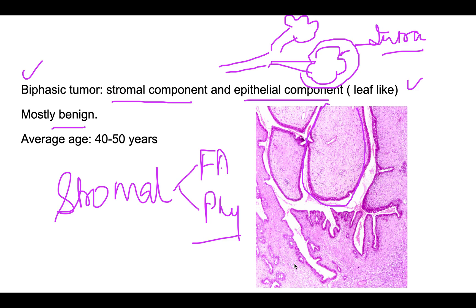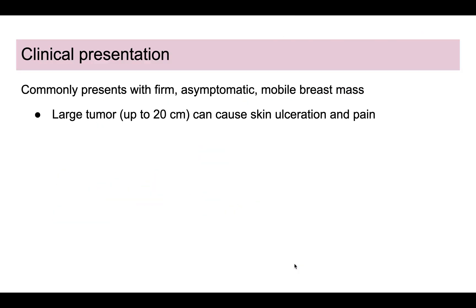This tumor is not always benign — it is mostly benign, but it can also be borderline or malignant. One important distinction is the average age of presentation: fibroadenoma is a tumor of the young population, mostly 20 to 25 years of age, whereas phyllodes tumor has an average age of 40 to 50 years.